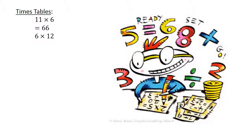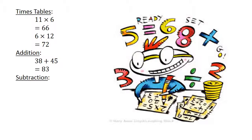Six times twelve equals seventy-two. Addition: thirty-eight plus forty-five equals eighty-three. Subtraction.